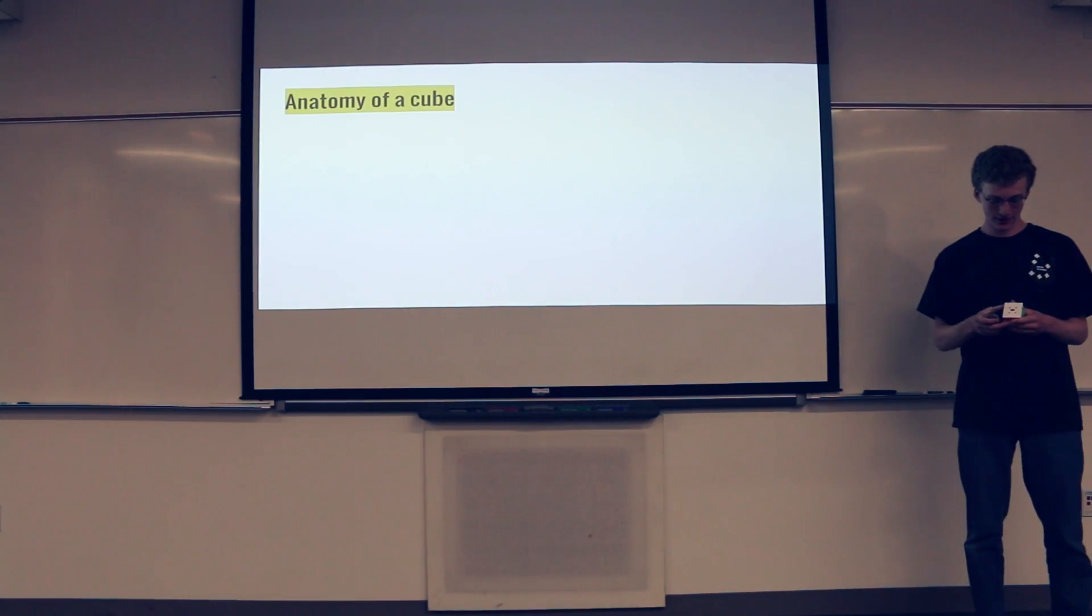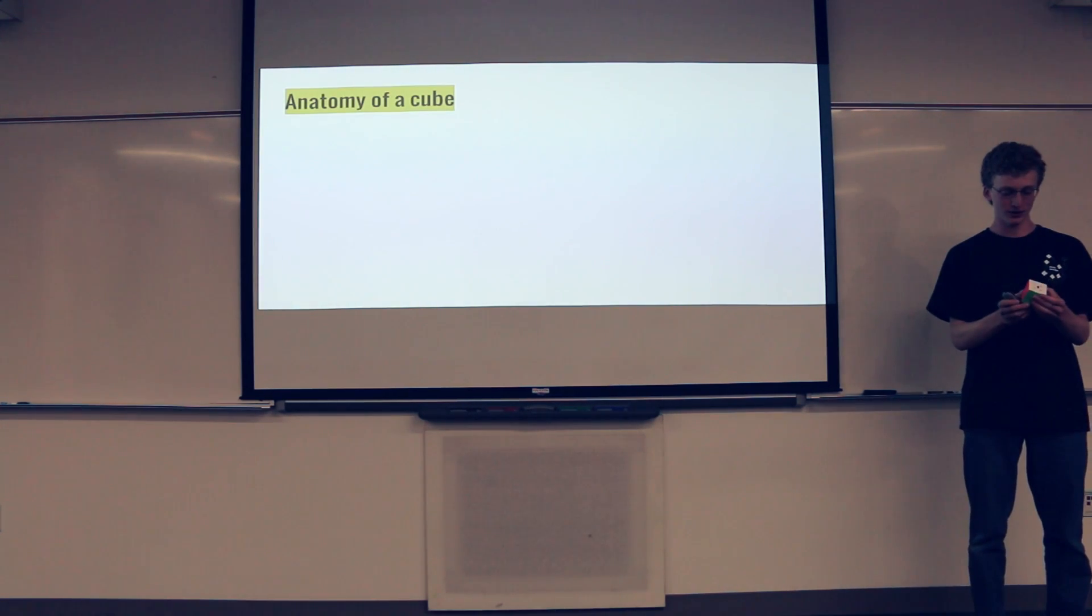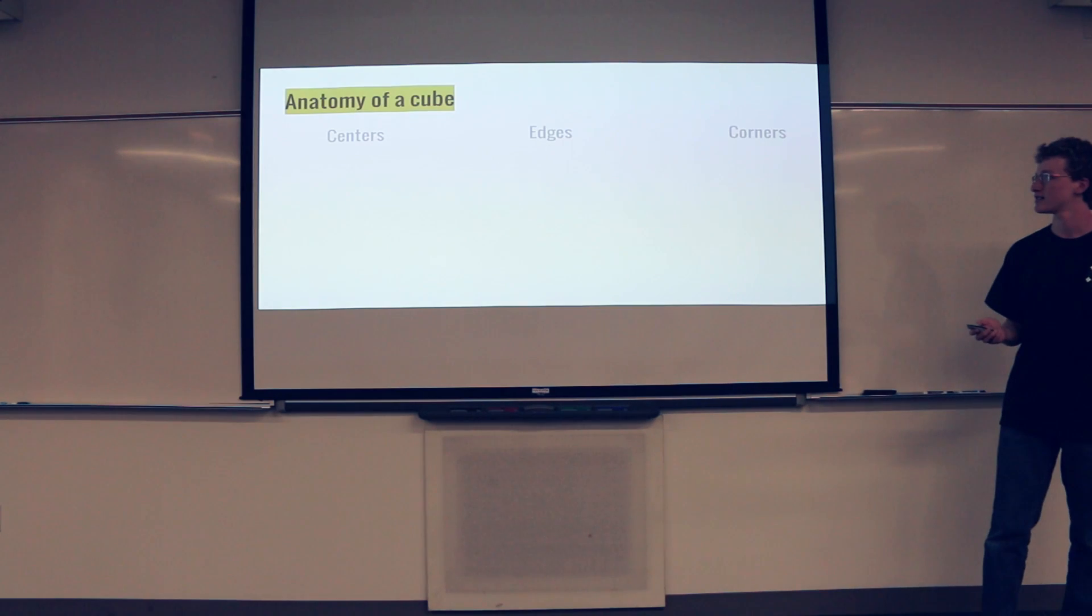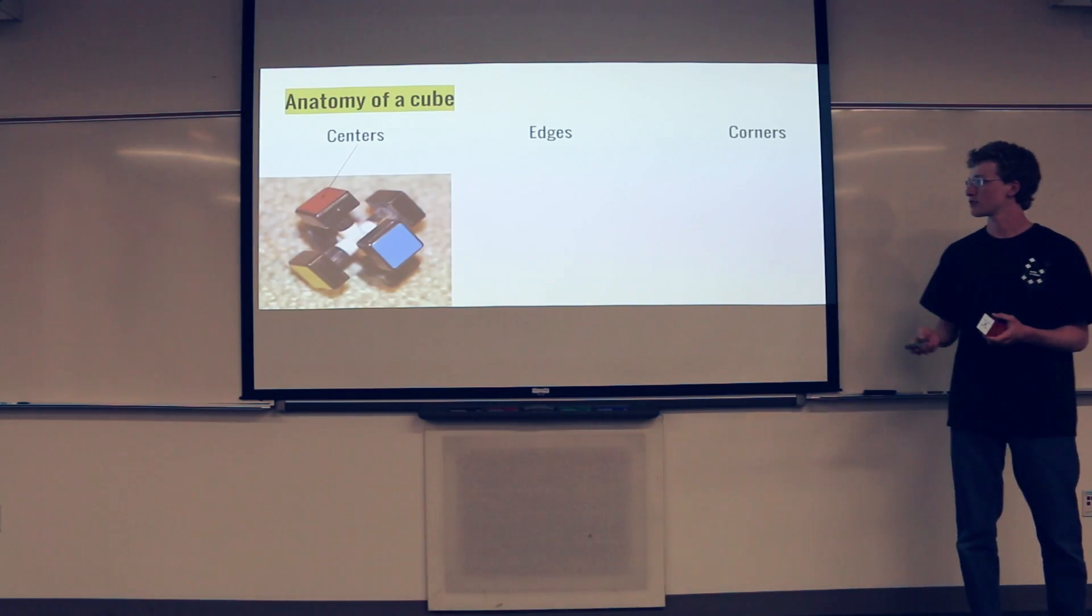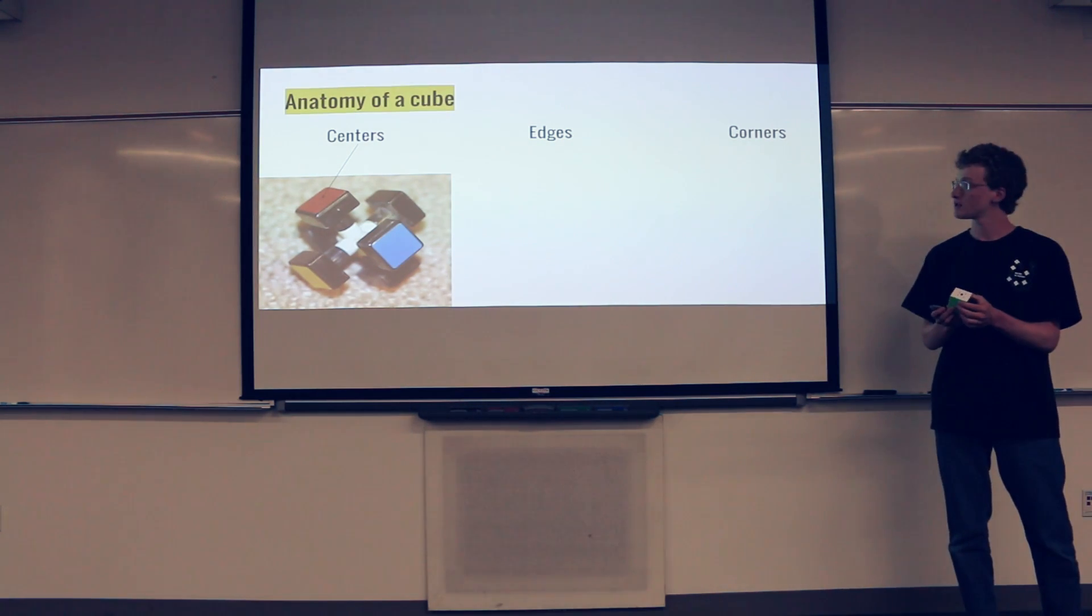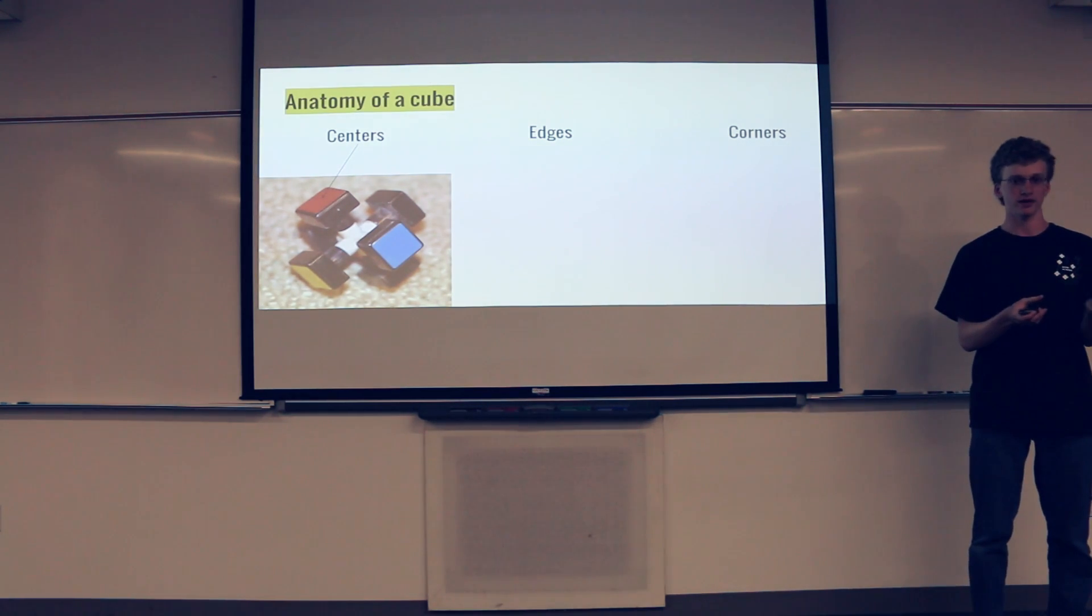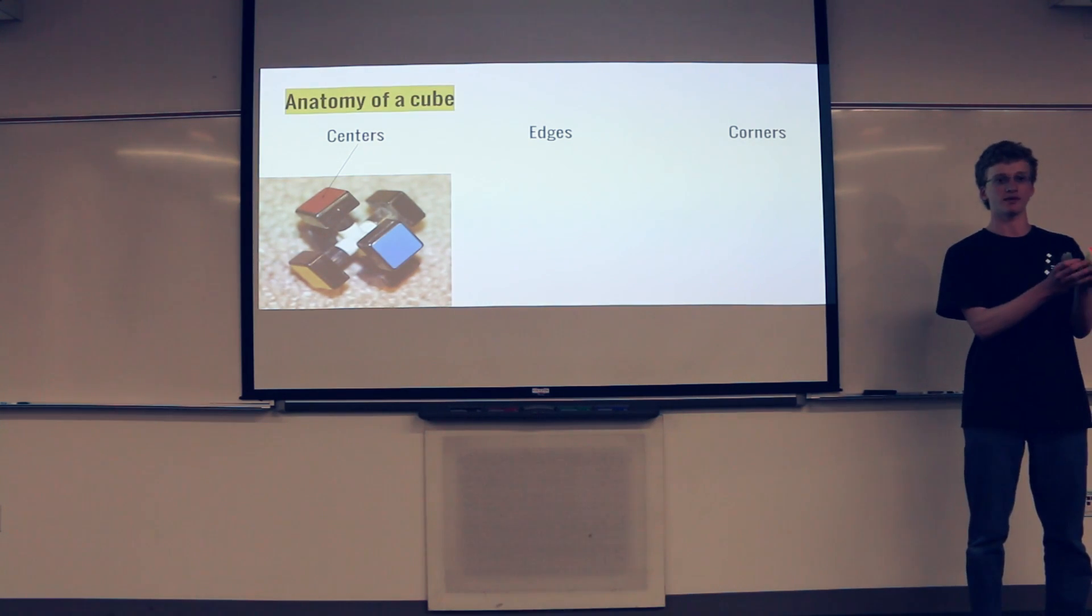Alright, so before I explain how we get to that really big number, I'm going to talk about some of the anatomy of a cube. There are 26 pieces on here, centers, edges, and corners. There are six center pieces. This is what a cube looks like when it's taken apart. As you can see, the centers don't move in relationship to each other. Like, the white center, for example, is always opposite the yellow center.